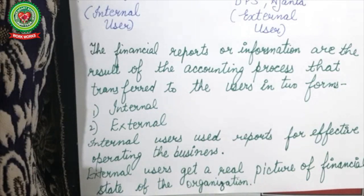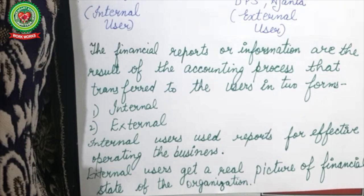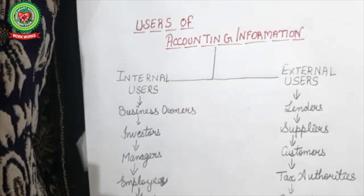In the Nike shoe store example, the manager uses accounting information for greater operational efficiency. External users, on the other hand, get a real picture of the organization's financial statements. External users include customers, consumers, lenders, creditors, taxpayers, and the press and media — they want an accurate presentation of a particular company's financial position.